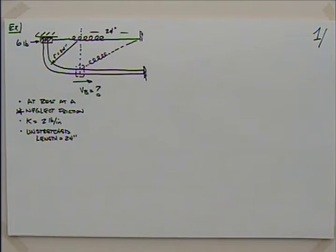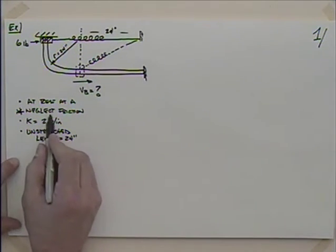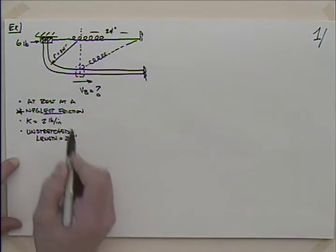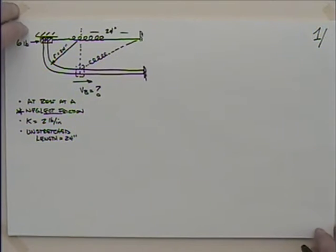I think I alluded to this problem as we were finishing up last time. This is definitely a conservation problem. Whenever we're told to neglect friction, negligible friction, or zero friction, we should start thinking about conservation — we don't have a friction force to deal with.